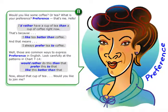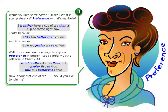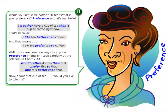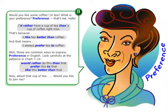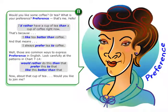Those are common ways to express preference in English. Look carefully at the patterns in chart 714. Would rather do this than that. Prefer this to that. Like this better than that.